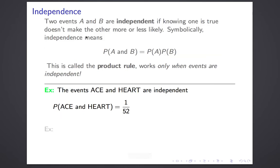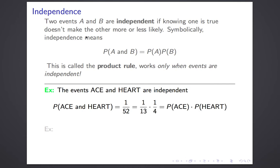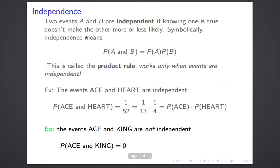Let's see some examples. The events A and B are independent. How do we know? Because knowing that a card is an ace doesn't make it any more or less likely to be a heart — it has no effect on whether or not the card is a heart. Let's see if the product rule works. The probability of A and B was 1 out of 52 because there was only one ace of hearts. The probability of ace times the probability of hearts is 1/13 times 1/4, which is 1 out of 52.